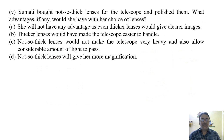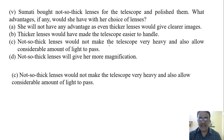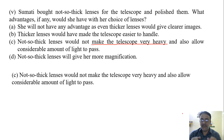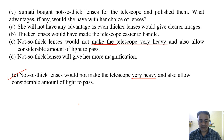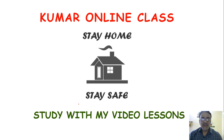The fifth question: Sumati bought not-so-thick lenses and polished them. What advantages would she have? Not-so-thick lenses would not make the telescope very heavy. A thicker lens would make the telescope heavy and would not allow a considerable amount of light to pass through it. Thinner lenses keep the telescope light and allow considerable light to pass through. The correct option is C. Thank you very much.